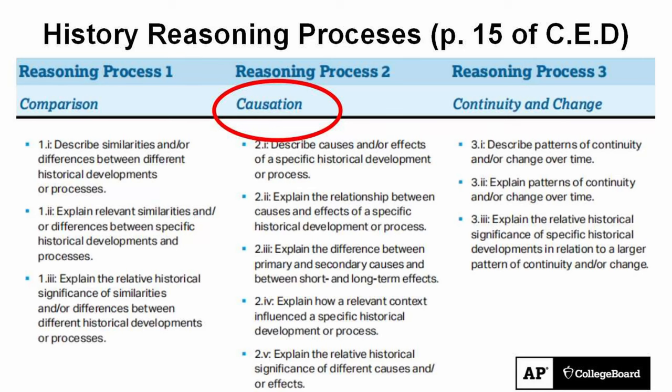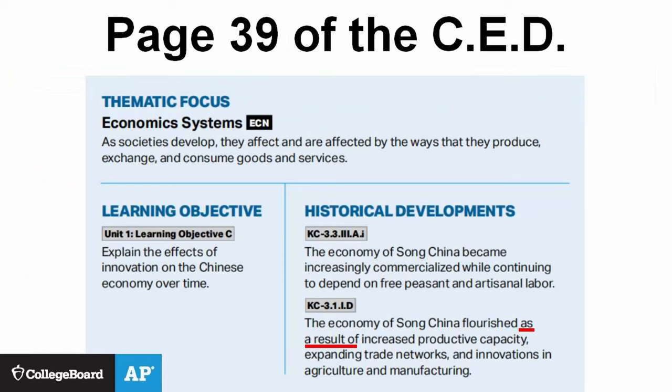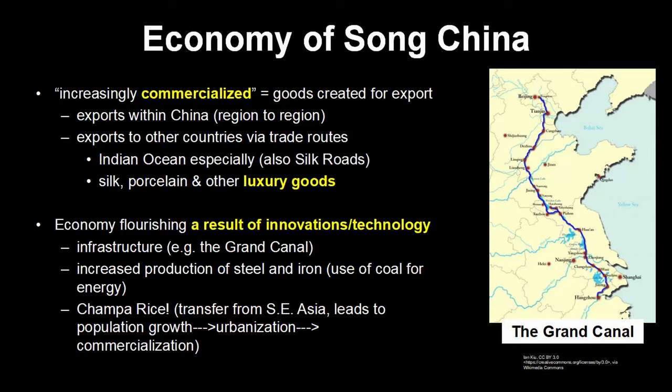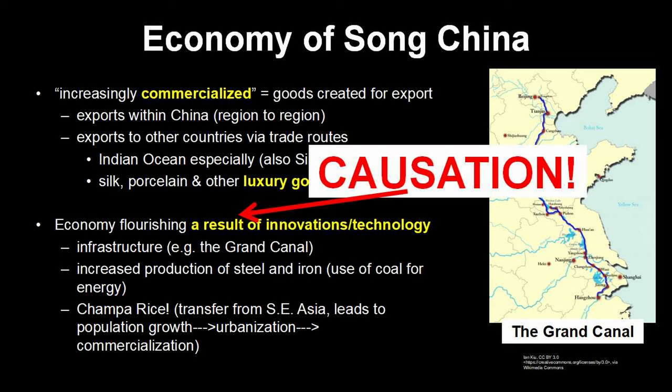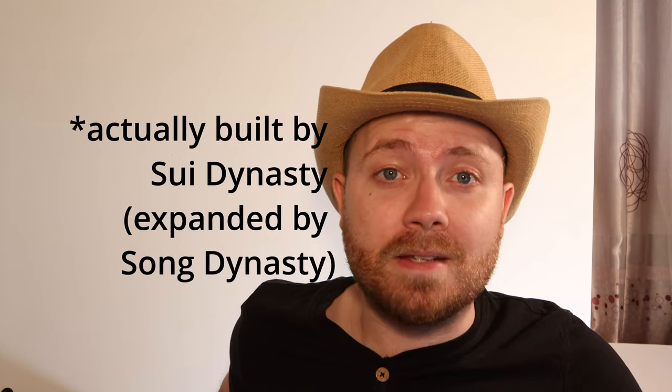Before we get to the exam examples, let's finish up with causation, starting with China's economics. The economy of Song China flourished — that phrase is a clue that we're talking about causation. Why is China's economy flourishing? What is the cause? Technological innovations! That's an example of how one historical theme — technology — has an impact on another — economics. The Grand Canal and other infrastructure allows trade inside China to increase. But who builds the Grand Canal? The Song Dynasty government. So actually there is a political cause for the technology, which causes economic growth. That's thinking like the College Board — that's how you get a five.